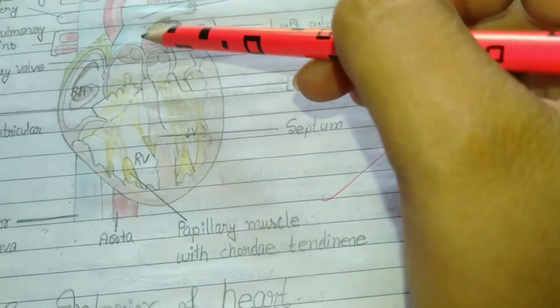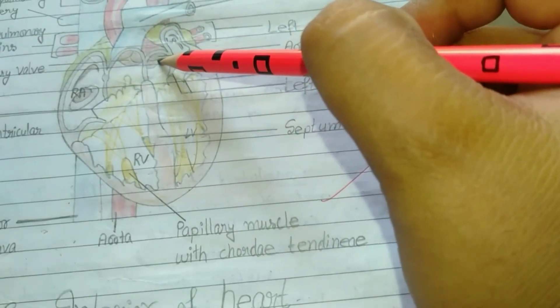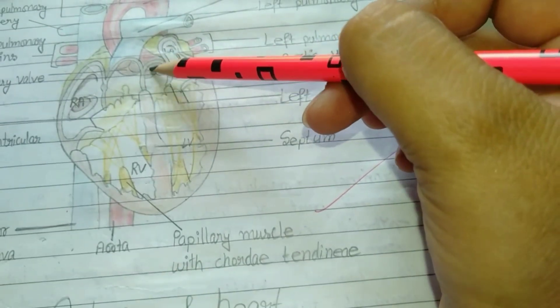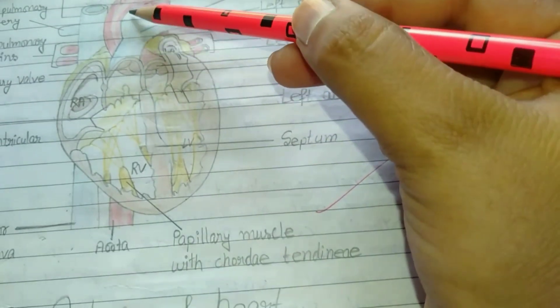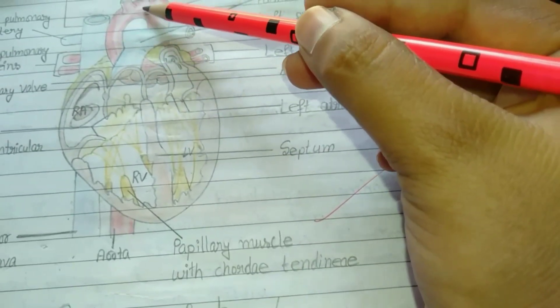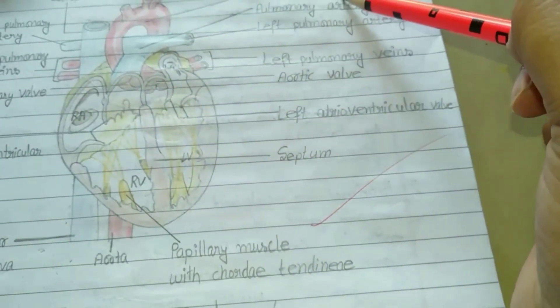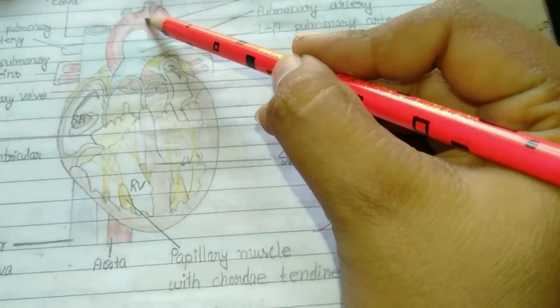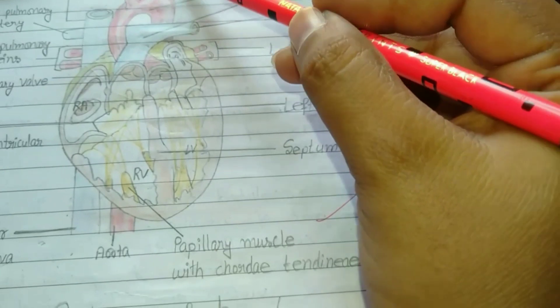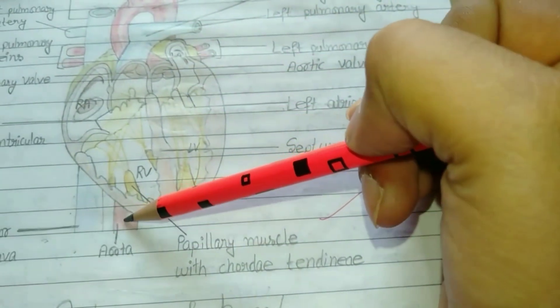From here when the aortic valves are opened, the oxygenated blood flows to the aorta. This is known as arc of aorta. From here blood goes to the upper body parts, and from here the blood goes to the lower body parts.